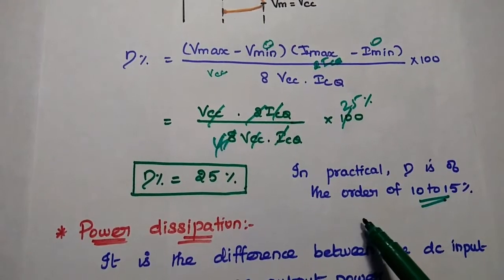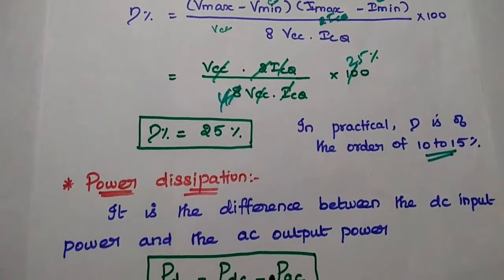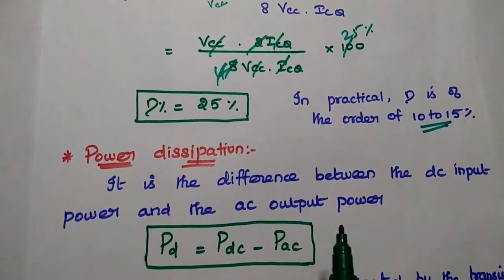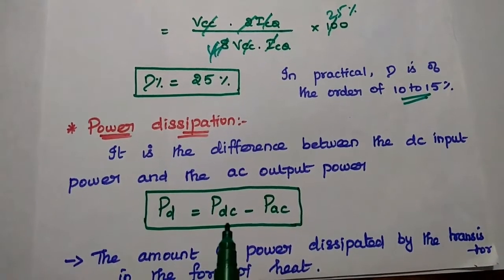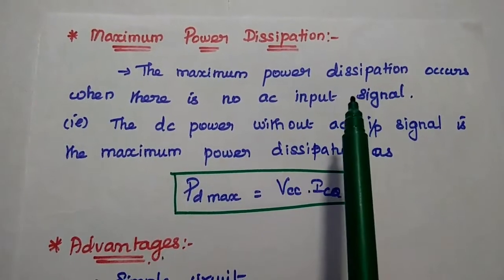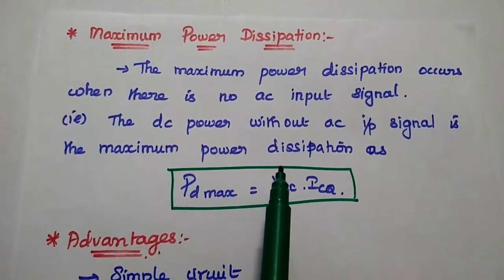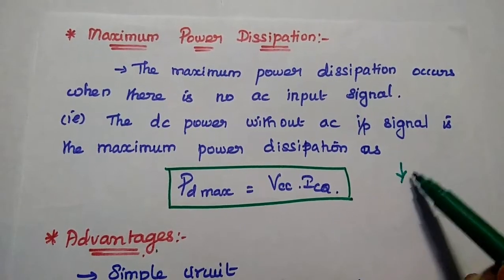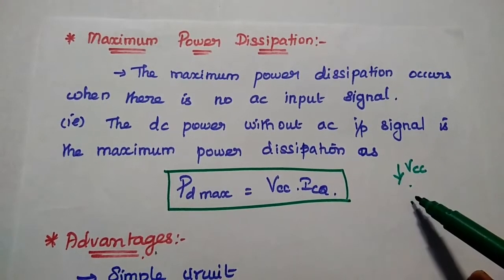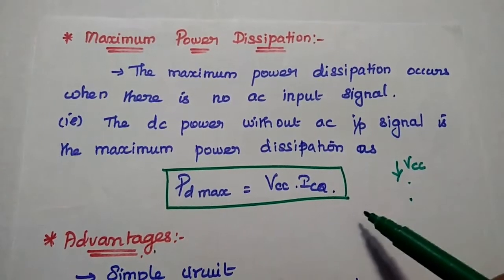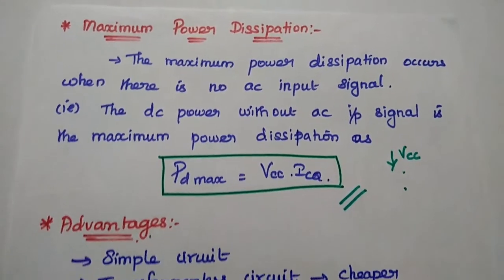This very poor efficiency is the major drawback of the Class A amplifier. Power dissipation is the difference between DC input power and AC output power — the amount of power dissipated as heat. Maximum power dissipation occurs when there is no AC input signal. When only VCC is supplied without any input signal, the maximum power is dissipated as heat, and the DC supply power equals the maximum dissipated power.